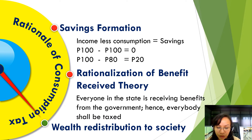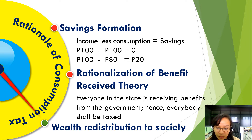In rationalization of benefit-received theory, everyone in the state is receiving benefits from the government; hence, everyone shall be taxed. While the rationale in wealth redistribution to society is that rich individuals will incur higher consumption because they have higher income levels. Therefore, they will incur higher consumption taxes and the government collects higher taxes from rich taxpayers.